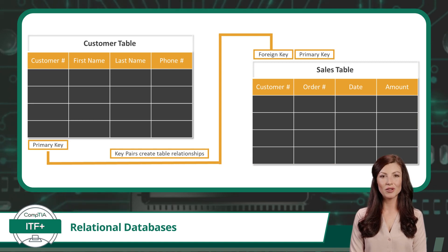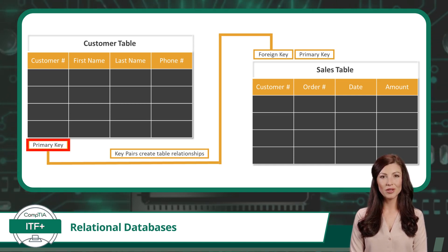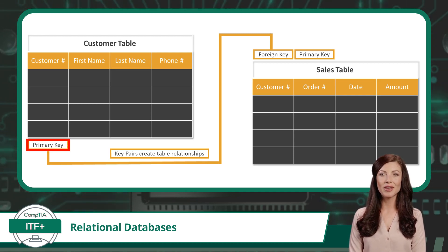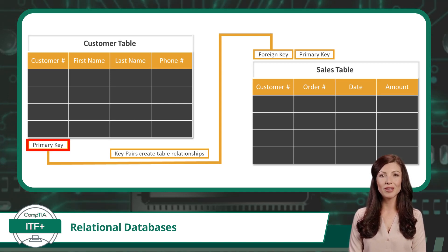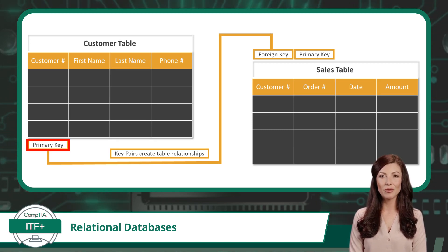So here is our challenge: we want to connect these tables to understand which customer made each purchase. That is where keys will come into play. The customer table has something called a primary key. Think of it as a unique ID for each customer — like assigning a customer number to each person. This unique number ensures that every customer record in the customer table has a distinct identity and cannot be confused with any other record. In a relational database, every table has a primary key.